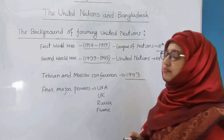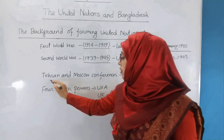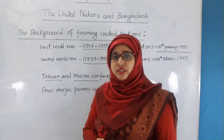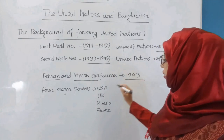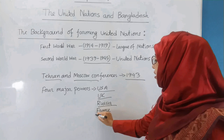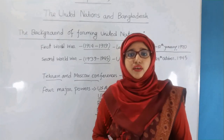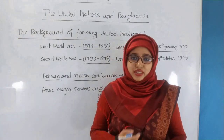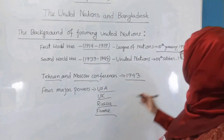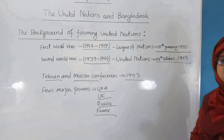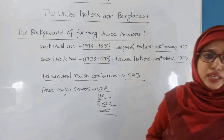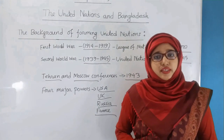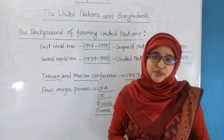Subsequently, in 1943, two conferences were held — the Tehran Conference and the Moscow Conference. Four major powers participated: USA, UK, Russia, and France. These leading countries tried to keep peace and security in the world. Consequently, the United Nations was formed on 24th October 1945. That is why 24th October is observed as United Nations Day, and every member country of the United Nations observes it as such.